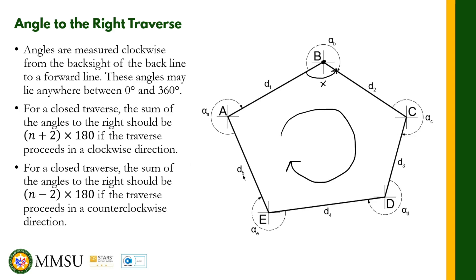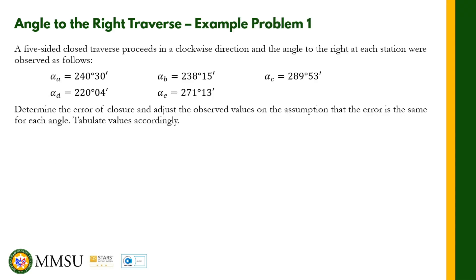When the traverse direction is counterclockwise, the interior angle and the angle to the right are actually the same, which is why the formula becomes (n-2) times 180 degrees. To illustrate this kind of traverse, let us solve a problem.